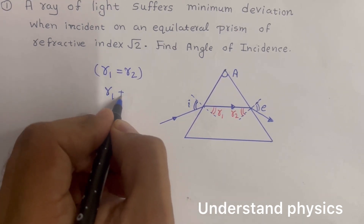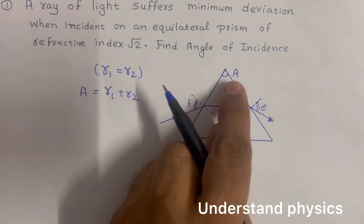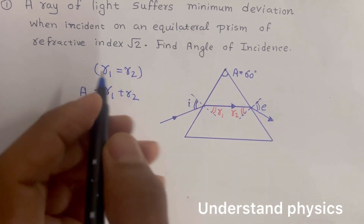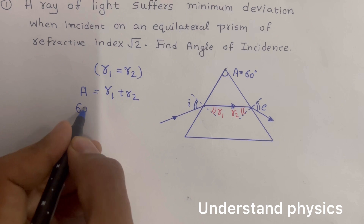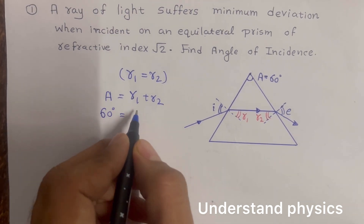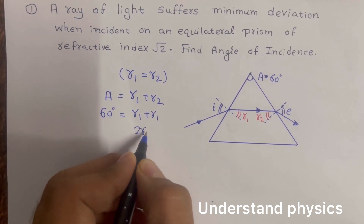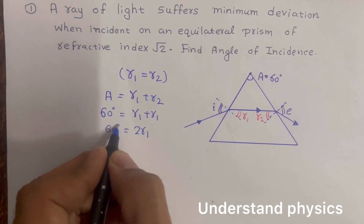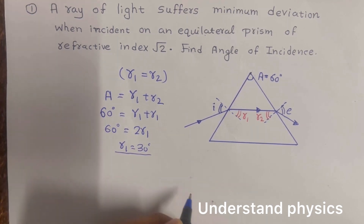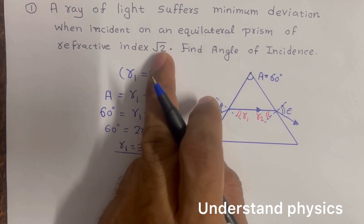The sum of r1 and r2 is equal to A, the angle of the prism. Since it is an equilateral prism, A equals 60 degrees. Because r1 and r2 are both equal, we write r1 plus r1, that is 2r1 equals 60 degrees, hence r1 equals 30 degrees.